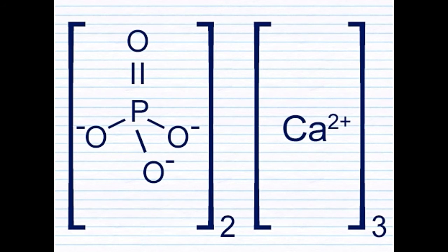Structurally, tricalcium diphosphate molecules consist, as the name makes obvious, of two ions of phosphates, PO₄³⁻, linked to three Ca²⁺ ions. Each phosphate ion contains four oxygen atoms, one of which is joined to the phosphorus atom by a double bond.